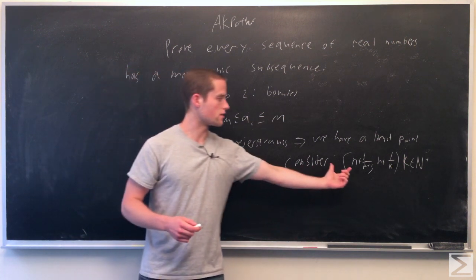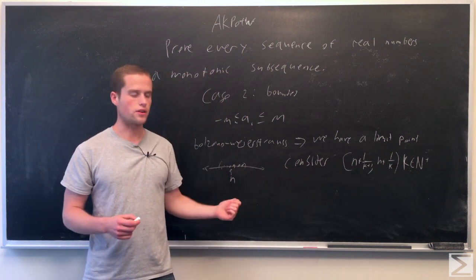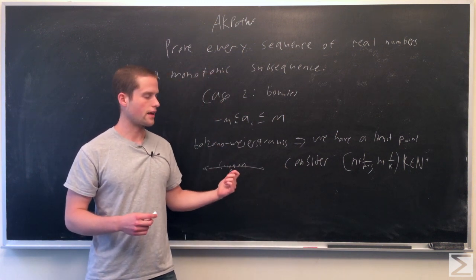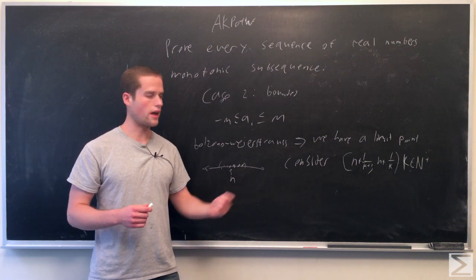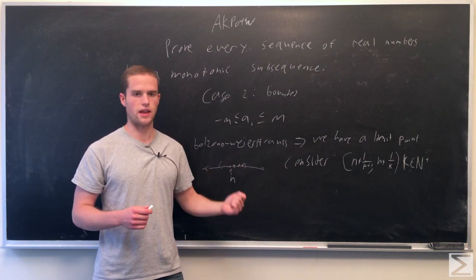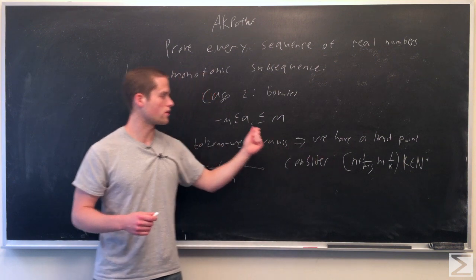Now we're going to look at these intervals. As our first point, take k equals 1, k equals 2, and go through values of k in the positive integers until we come across a k so that this interval contains a point of our sequence.